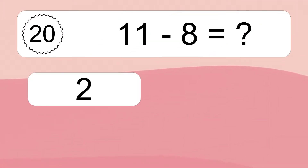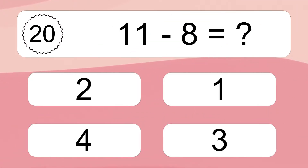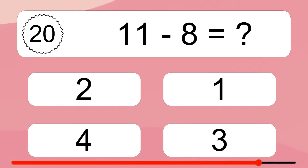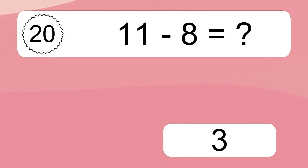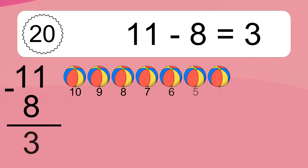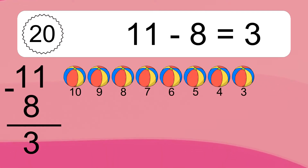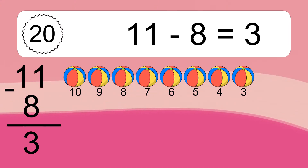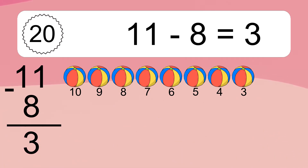11 minus 8 equals what? 11 minus 8 equals 3. Let's count it: 10, 9, 8, 7, 6, 5, 4, 3.